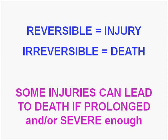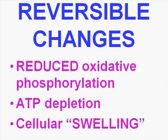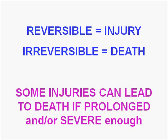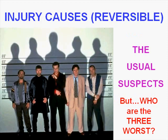Reversible changes are regarded as injury and irreversible changes are regarded as death. But remember, many reversible changes, if prolonged or severe enough, will lead to irreversible changes. So all of the reversible changes we've discussed can eventually lead to irreversible changes, or death. What are some of the things which cause death and injury?